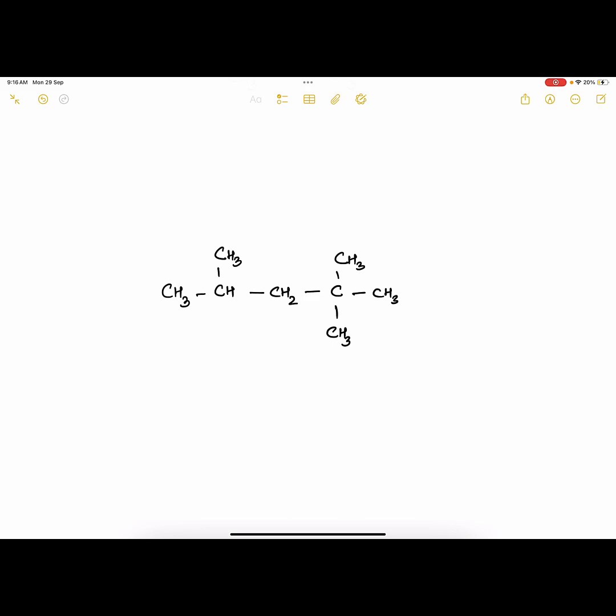Let's name this organic compound. First, look for any functional group. There is no functional group here, so it is a hydrocarbon. Then look for double or triple bonds. There are no double bonds or triple bonds here, so it's an alkane.